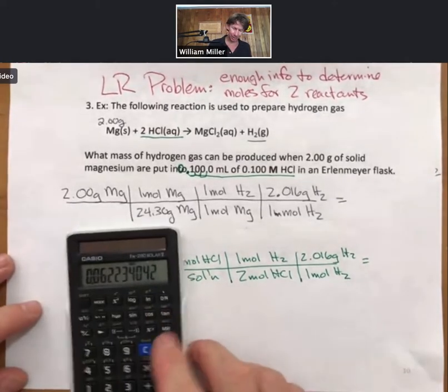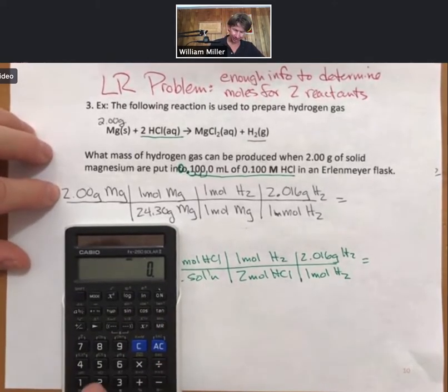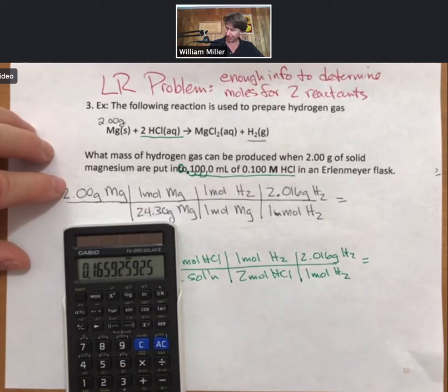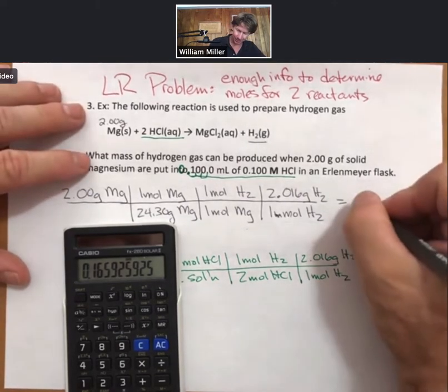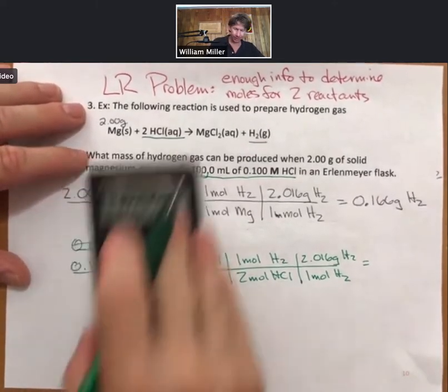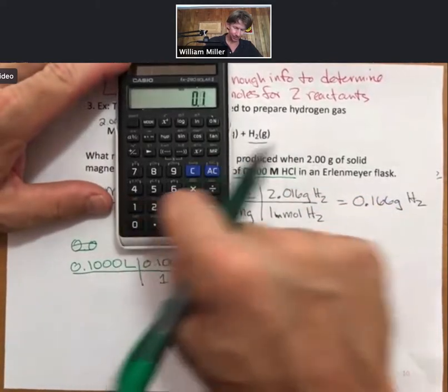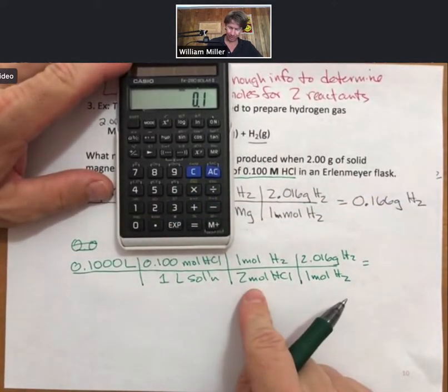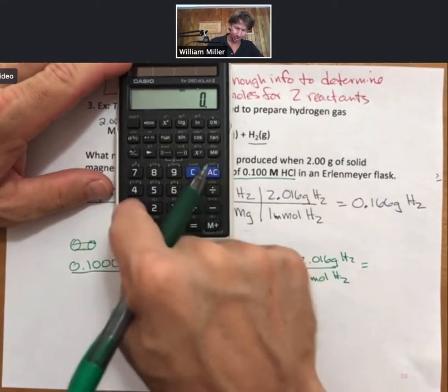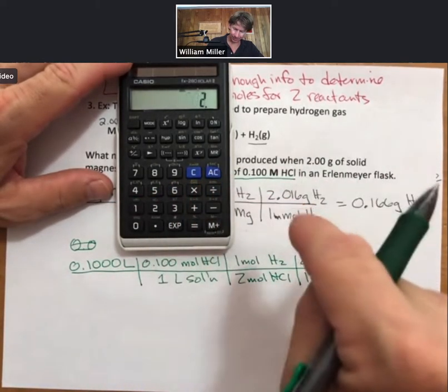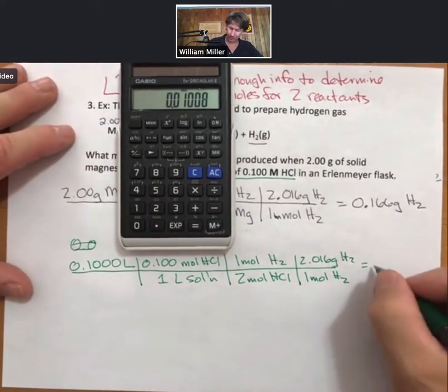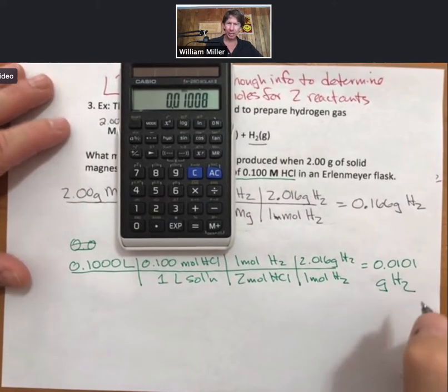Now let's multiply these two sets of calculations out. 2 grams divided by 24.3 times 2.016. I get 0.166 grams of hydrogen. For the other one, 0.1 times 0.1 divided by 2 times 2.016. 0.0101 grams of hydrogen.